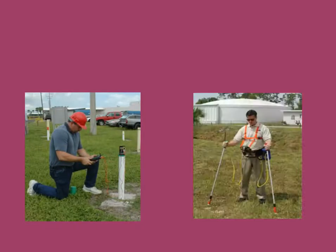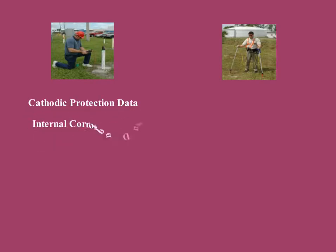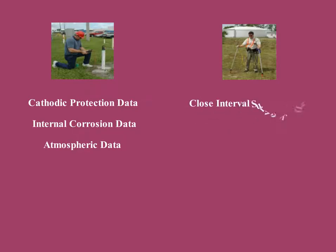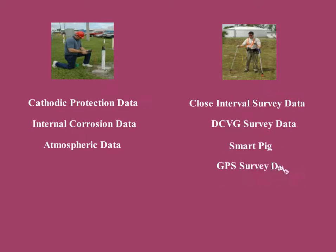ProActive supports both inspection site and pipeline survey data in an integrated fashion. On the inspection site side, ProActive supports cathodic protection data, internal corrosion data, and atmospheric data. On the pipeline survey side, ProActive supports all sorts of survey data such as CIS, DCVG, SmartPIG, GPS, ground altitude, and depth of cover.